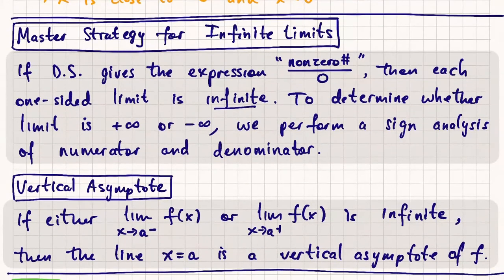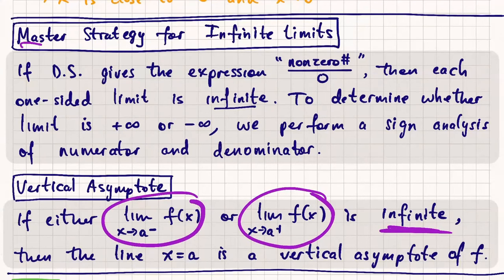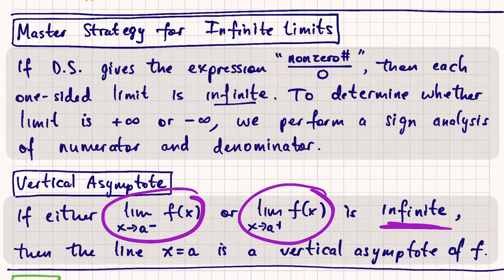Why does that make sense? A vertical asymptote is a vertical line x equals a, as long as one of the one-sided limits is infinite. I want an infinite limit. Looking at the master strategy, I get infinite limits from expressions that are like non-zero over zero. Non-zero over zero always leads to infinite limits, and infinite limits mean vertical asymptotes. That's why setting the denominator equal to zero is the strategy.